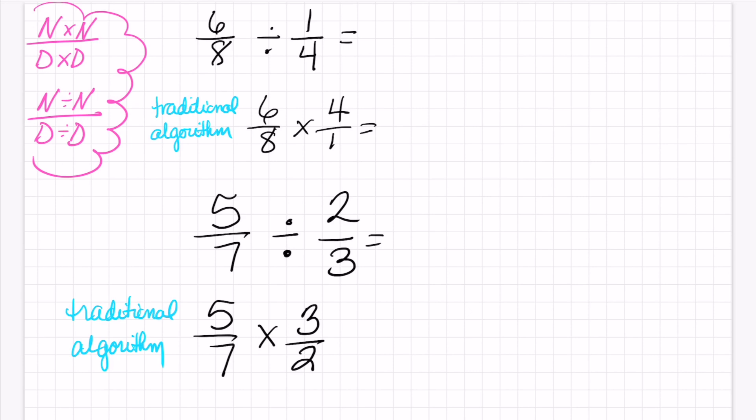If I have 6/8 and 1/4, could I just divide straight across? Then we're going to just check and see if it's true. 6 divided by 1 is 6. 8 divided by 4 is 2. And I know that this is improper, 3.